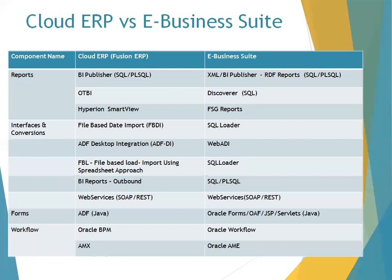To design a BI Publisher report you require SQL as well as PL/SQL, and the tool you use is Microsoft Word with the BI Publisher plugin. For discoverer-type reports — where business users require minimal technical knowledge — Cloud ERP has OTBI (Oracle Transactional Business Intelligence). No programming language is involved; you just choose the data, apply filter criteria, and generate it. For financial statement reports, similar to FSG in eBusiness Suite, the equivalent available in Cloud ERP is Hyperion Smart View.